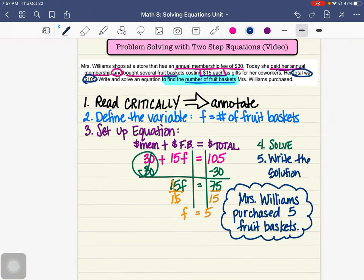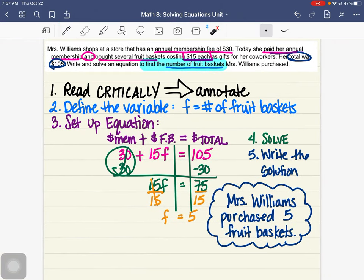And that would be the answer to this problem. So here are our steps: read and annotate. I would always highlight or make something bigger, what your end goal is. What are we trying to find? Define your variable. Set up the equation using symbols and words. Then plug in the numbers from the problem. Solve it. And then write out your solution. All right, let's try this next problem.